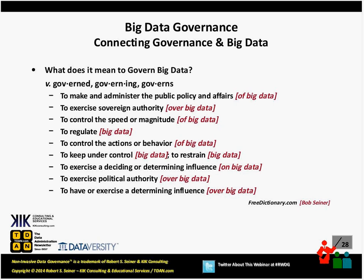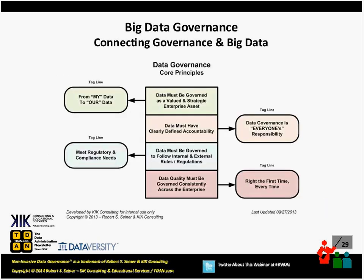What does the definition of 'to govern' something mean? The dictionary says: to make and administer public policy and affairs, to exercise sovereign authority, to control the speed, to regulate, to control actions or behaviors. If we're going to do all those things over big data, that's what it means to govern big data — to keep it under control, to exercise the deciding or determining influence. All of those dictionary definitions apply to the governance of big data, the governance of small data, metadata, master data, and whatever type of data we have in our organization.